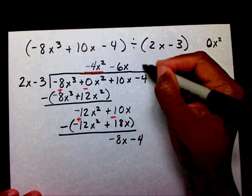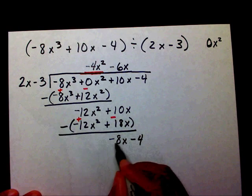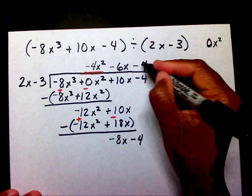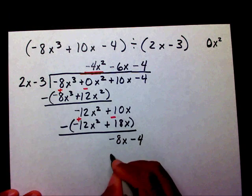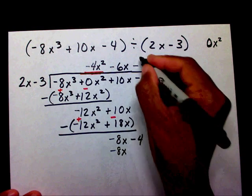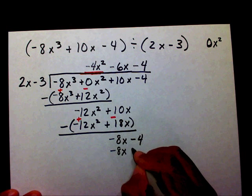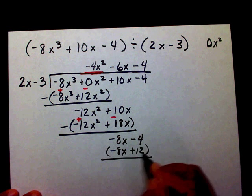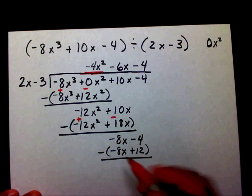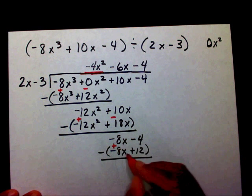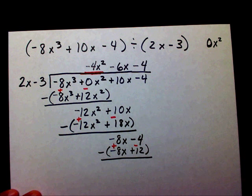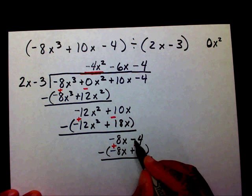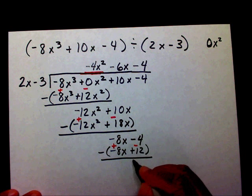What number times 2x will give me negative 8x? Well, negative 4. Negative 4 times 2x is negative 8x, and negative 4 times negative 3 is a positive 12. I need to subtract this binomial — I'm going to distribute by negative. That'll become plus 8x and this will become minus 12. The x's will cancel each other out. That leaves me with negative 4 minus 12, which is negative 16.